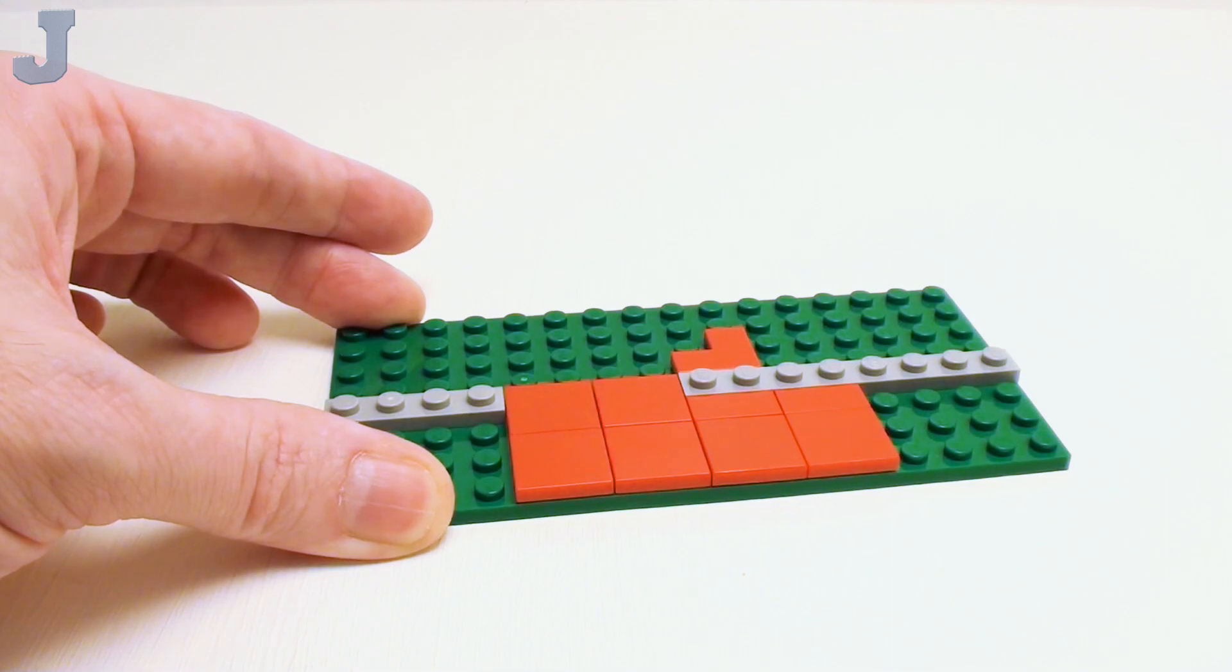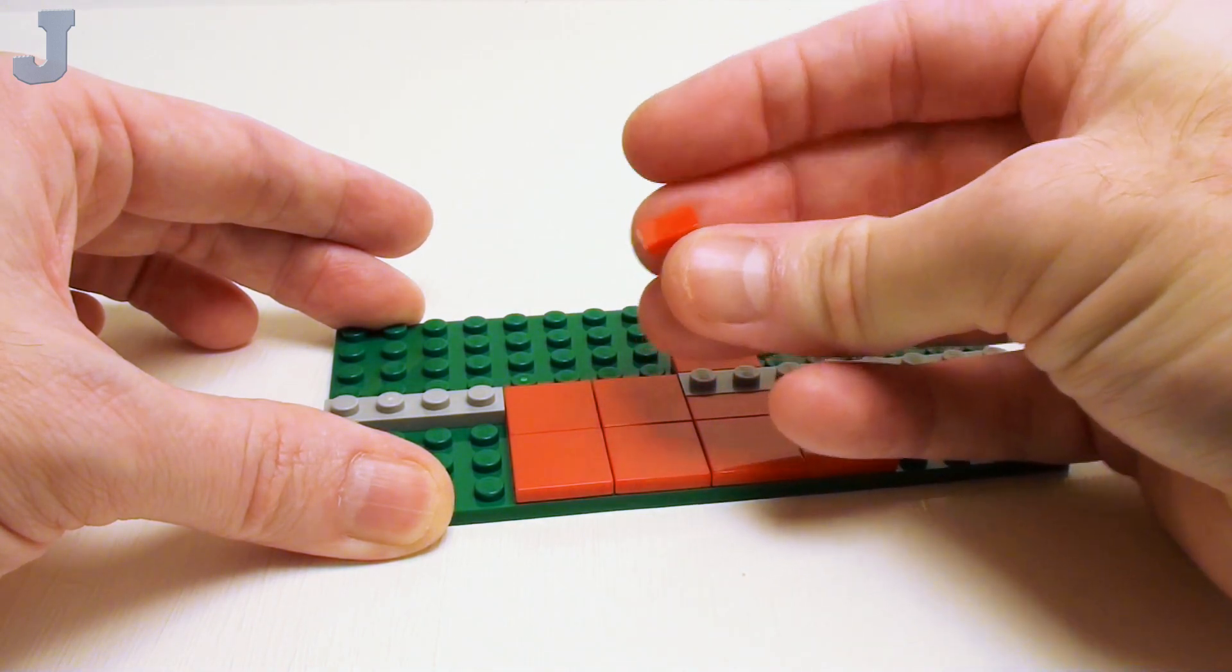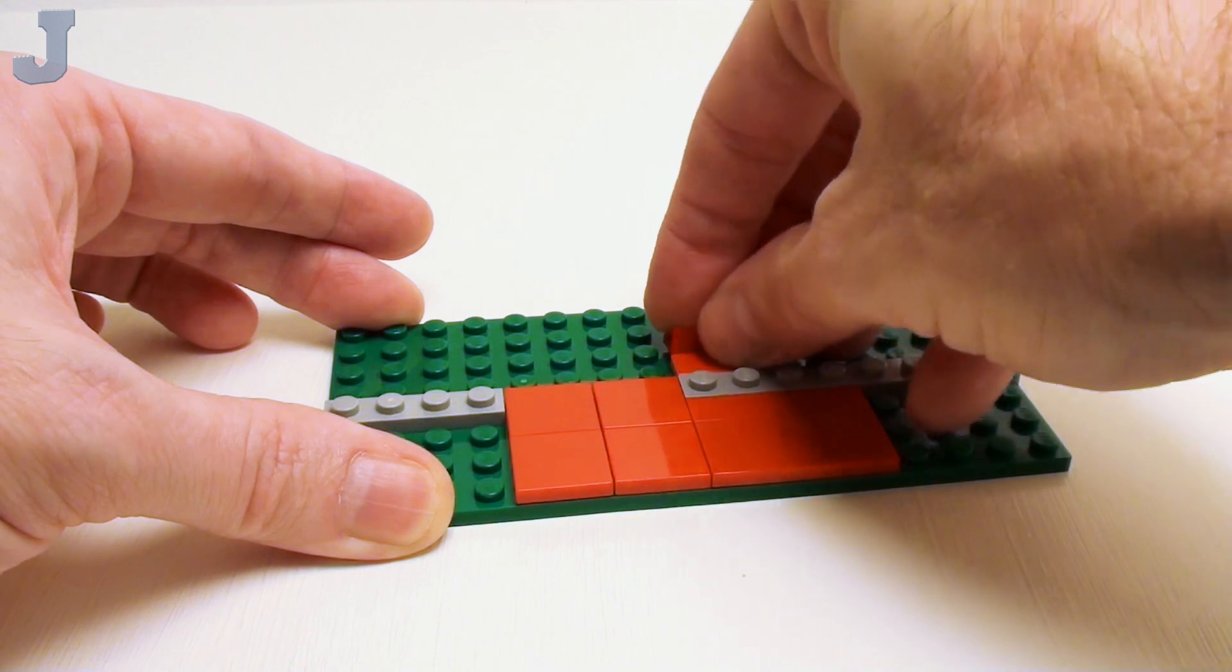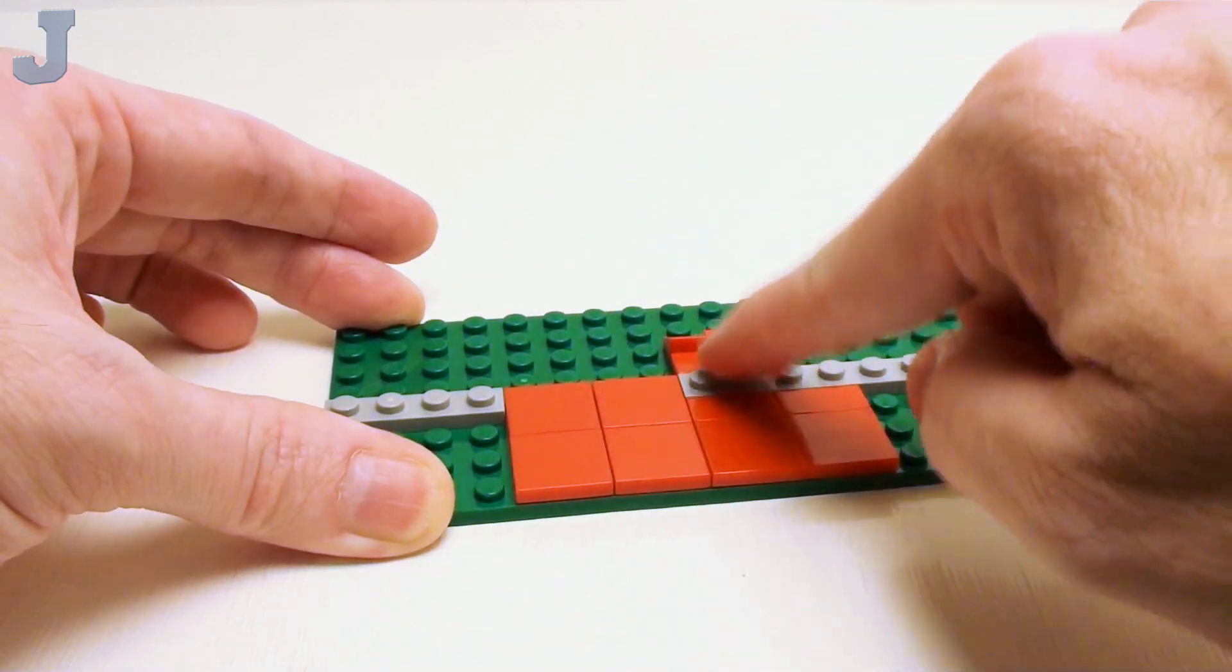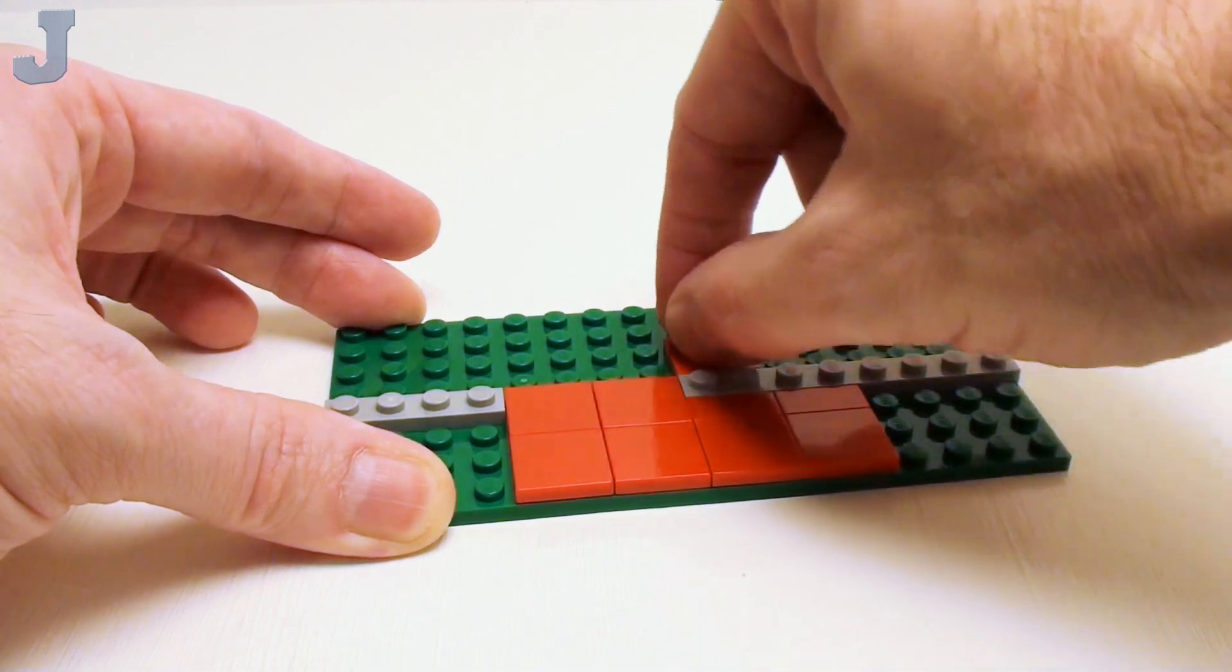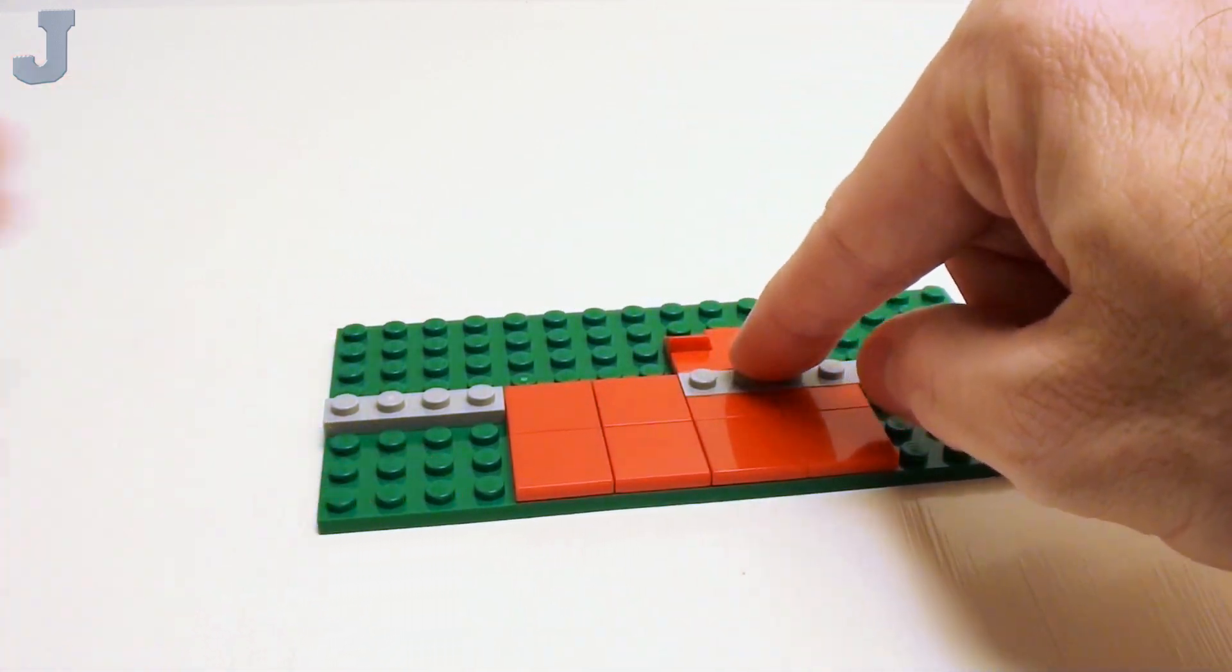Now why am I using that? Because I'm going to set in a 1 by 1 by 2 thirds cheese slope. We're going to make sure that the largest side of the slope is facing this plate. This is going to be our little track for our sliding door.